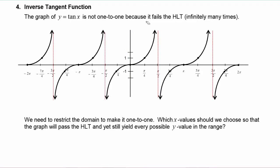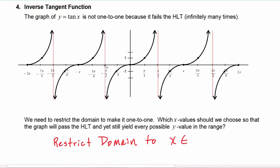Remember that it's customary to pick the section of the graph closest to the origin, so you can probably see pretty easily here that we will restrict the domain to be those x values in the interval from negative pi over two up to positive pi over two. Notice I'm using the curved brackets, not the hard brackets, because negative pi over two and positive pi over two are not included because of the vertical asymptotes there.